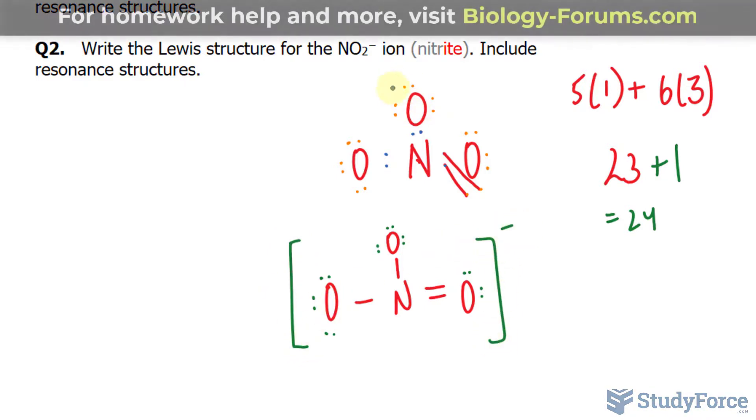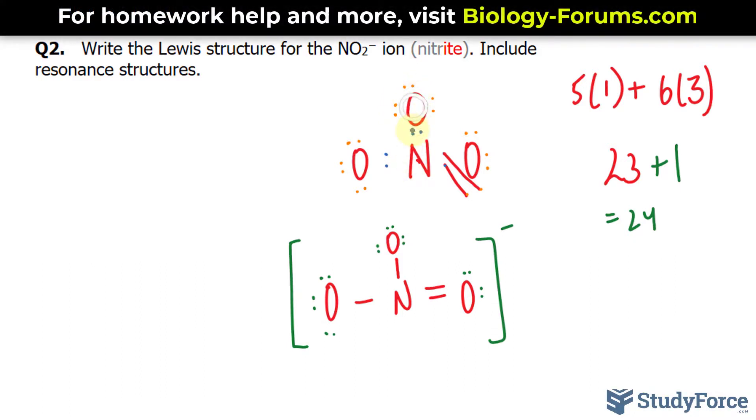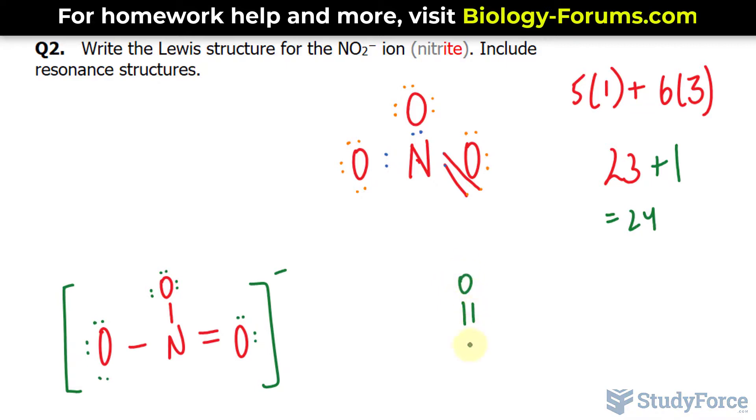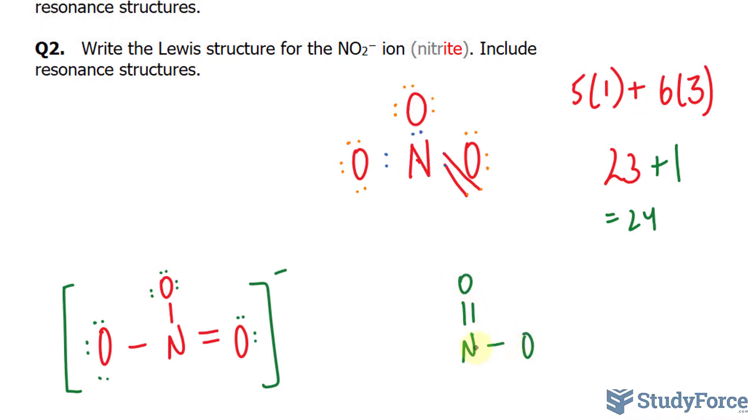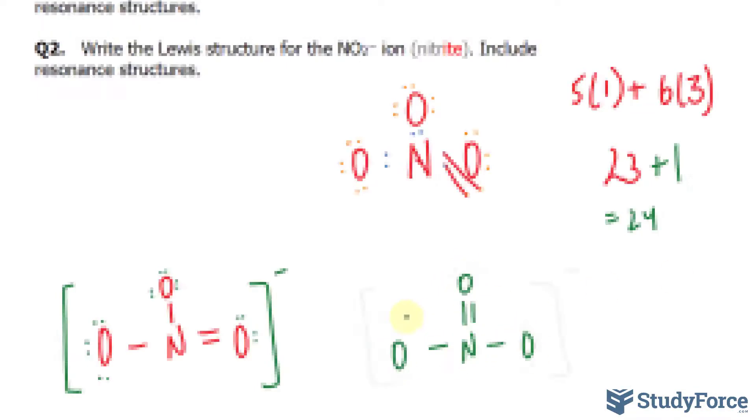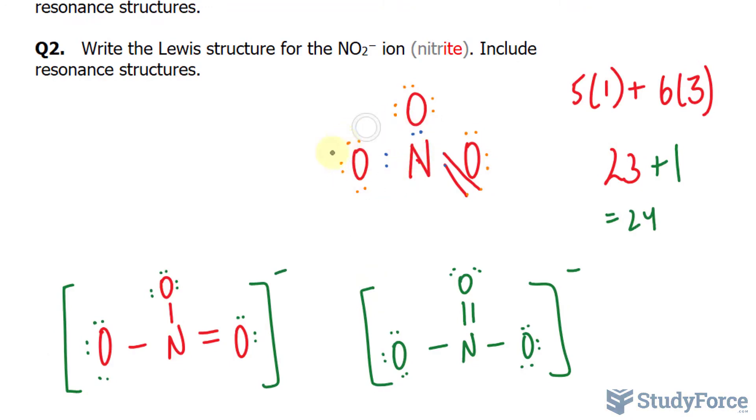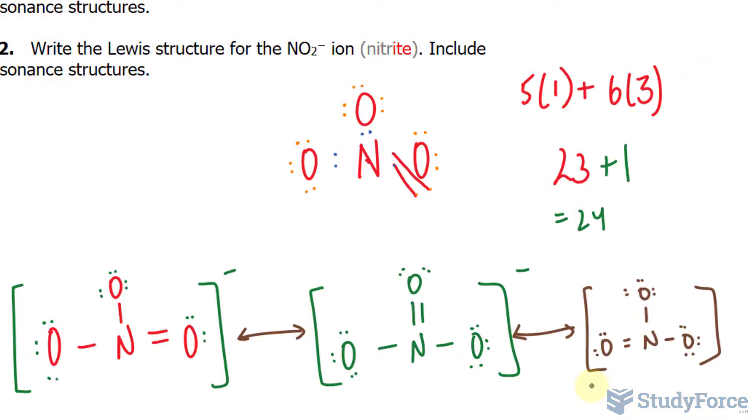Now of course, this could have happened with the relationship between these two atoms, and we can represent that as a double bond with this oxygen and single bonds with these two. Or it could have happened with these two. And we can show this with these double arrows. That right there is the Lewis structure for nitrate.